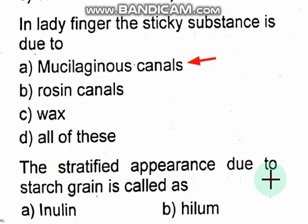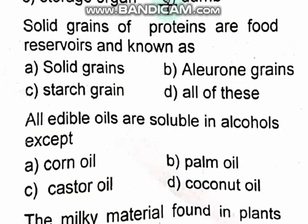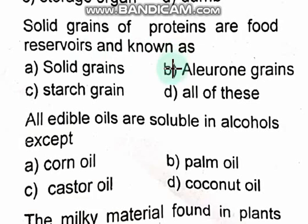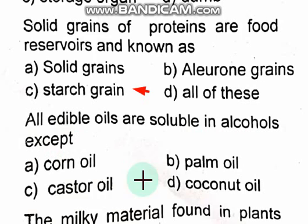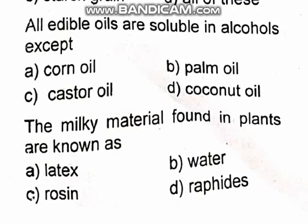The stratified appearance due to starch grains is called inulin. Solid grains of proteins are food reservoirs. All edible oils are soluble in alcohols except coconut oil — that is the right option. The milky material found in plants is known as latex — option A.